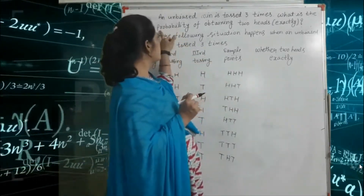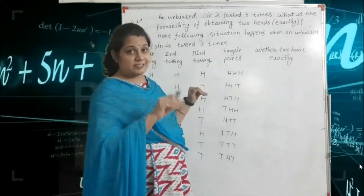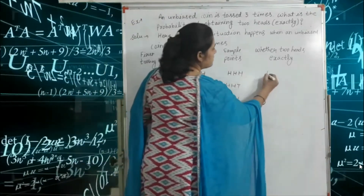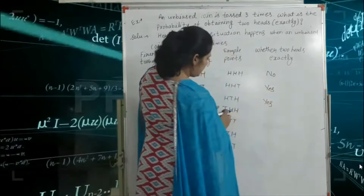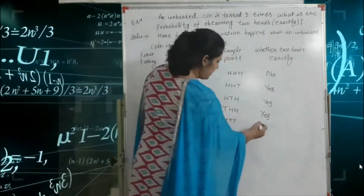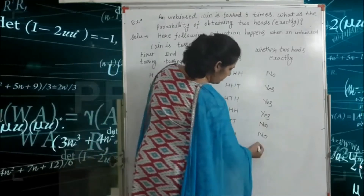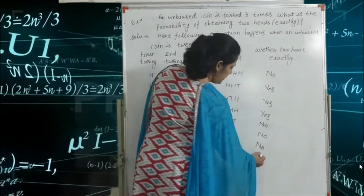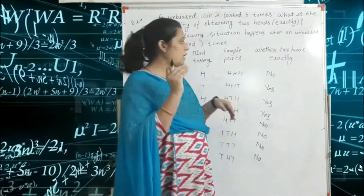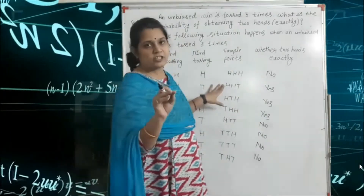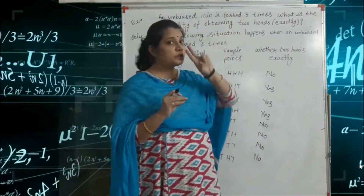But our question is: what is the probability of obtaining exactly two heads? So we check each sample point. Three heads — no. Two heads — yes, yes, yes. One head — no, no, no. Zero heads — no. One head — no. So the favorable events for exactly two heads are three conditions.